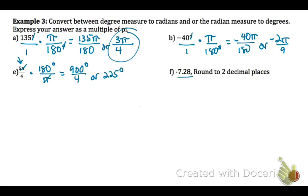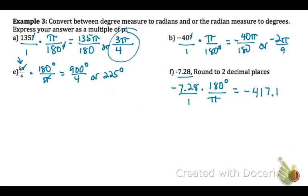For a decimal radian value, since it starts as a decimal, we can round and end up with a decimal answer. There's no degree unit, so it's radian — convert to degrees by multiplying by 180/π. Take 0.728 times 180, then divide by π. That angle measure is approximately 417.11 degrees.